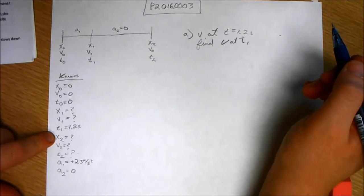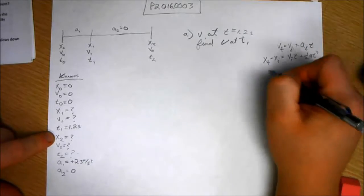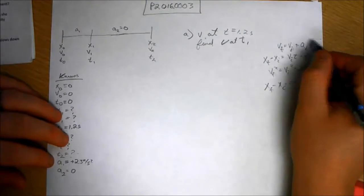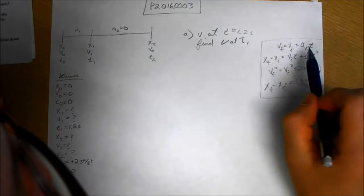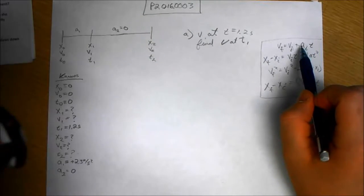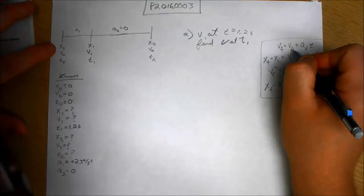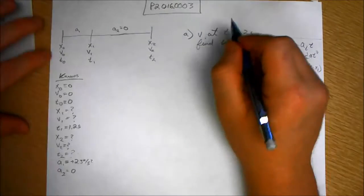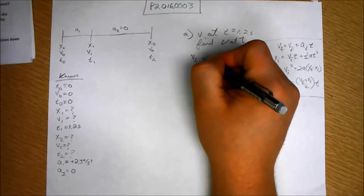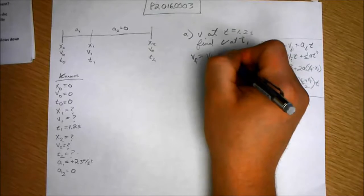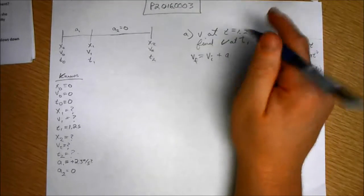Well, the first thing you would do is you would look at your kinematic equations. Keep those written somewhere so you can refer to them. Now, we have t, we have acceleration, we don't have v final, but we have v initial because v initial is zero, so we can easily find that velocity using this first equation. v final equals v initial plus a t.